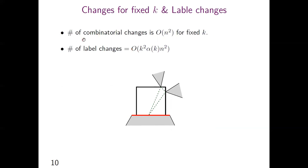We found that the number of changes is O(n²) for fixed k, but I will omit details in this presentation. While we count the number of changes for fixed k, we can obtain the number of label changes as O(k² · alpha(k) · n²). The remaining part focuses on counting the number of edge changes.